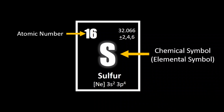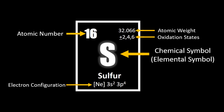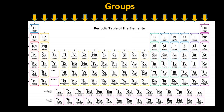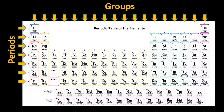The atomic number is typically the largest number displayed for any elemental symbol, and is commonly located in the upper left-hand portion of an element's box. Other figures often featured in an element's box include its atomic weight, its oxidation states, the element's electron configuration, and the full elemental name. The columns represent groups, and we call the rows periods.